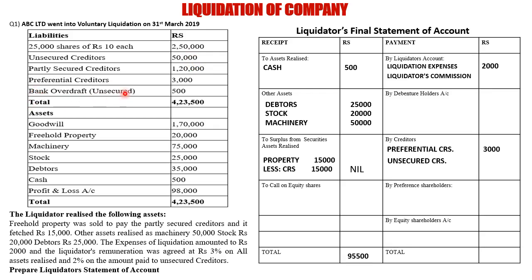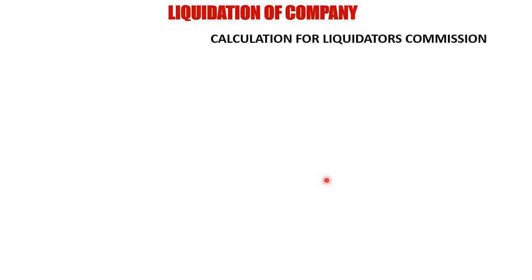Adding the bank overdraft (also unsecured) gives total unsecured creditors of Rs. 1,55,500. However, the total receipt is only Rs. 95,500, so we cannot pay the full amount of unsecured creditors. Since we can't determine that value, we also can't find the liquidator's commission. We use working notes to find out the exact values.